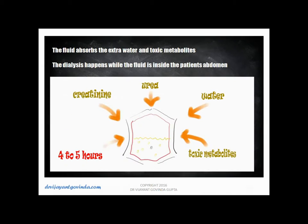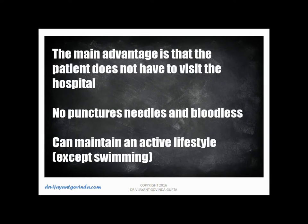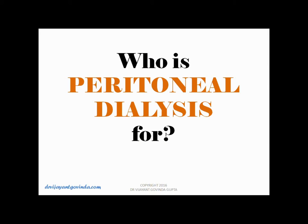The fluid absorbs the extra water and other toxic metabolites. The dialysis happens while the fluid is inside the patient's abdomen. Over a period of four to five hours, the fluid will absorb creatinine, urea, water, and other toxic metabolites. The main advantage of peritoneal dialysis is that the patient does not have to visit the hospital — no punctures, no needles, and it is completely bloodless. The patient can maintain an active lifestyle, except for swimming.